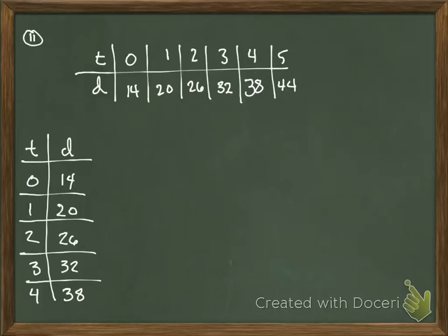Okay, so number 11 says students studying motion observed a cart rolling at a constant rate. The table below gives you intervals from t equals 0 seconds to t equals 5 seconds. Which equation represents the relationship between d and t?